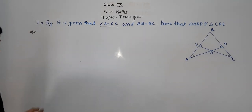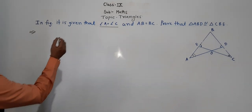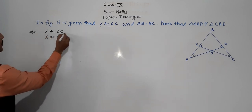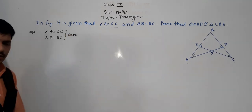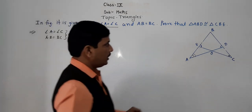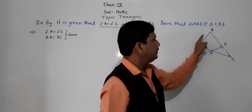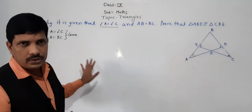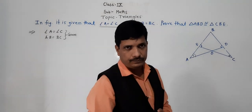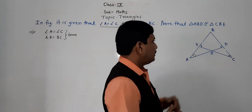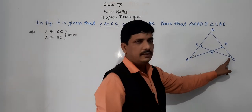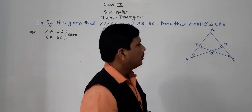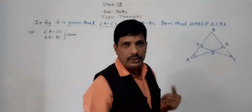Now, which things are given that I am going to use here. First, angle A is equal to angle C — that is given. Second, AB is equal to BC — that is also given. Now, thinking directly about these two triangles ABD and CBE: two things are given but the third thing is not given. We need one more thing.